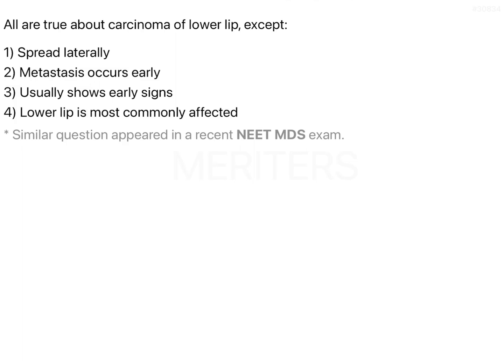Now, coming to the answer options — you need to identify which statement is false. 'Spreads laterally' — as discussed, it does spread laterally, going on either side. Lymph node and distant metastasis, or regional lymph node metastasis, occurs only at a very late point if the tumor continues to spread and progress over years.